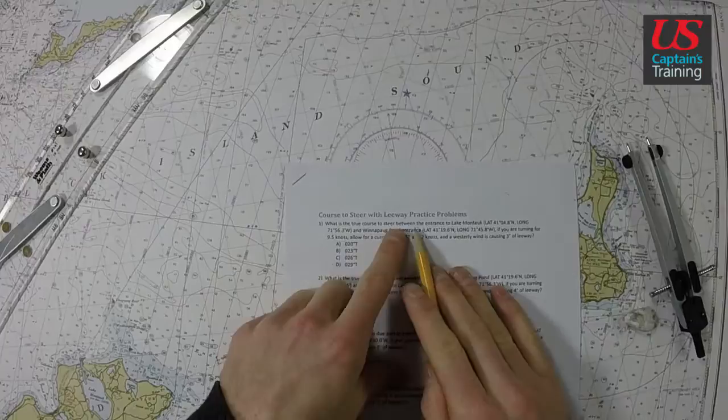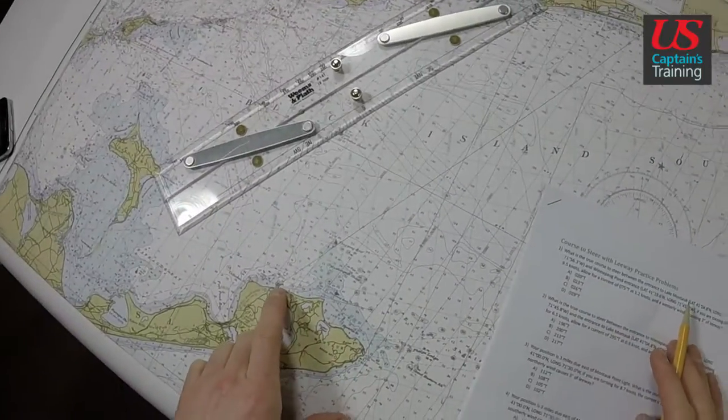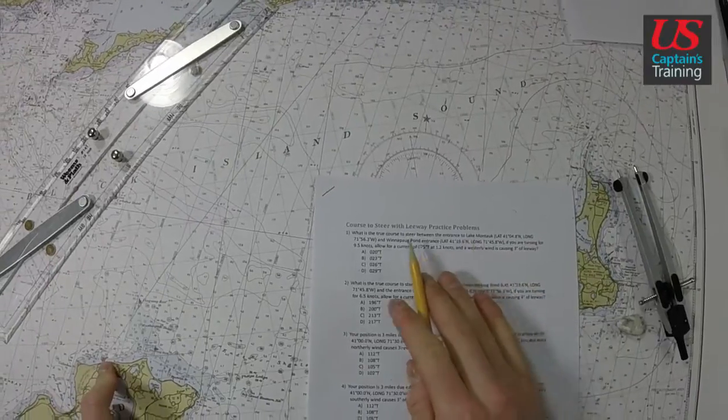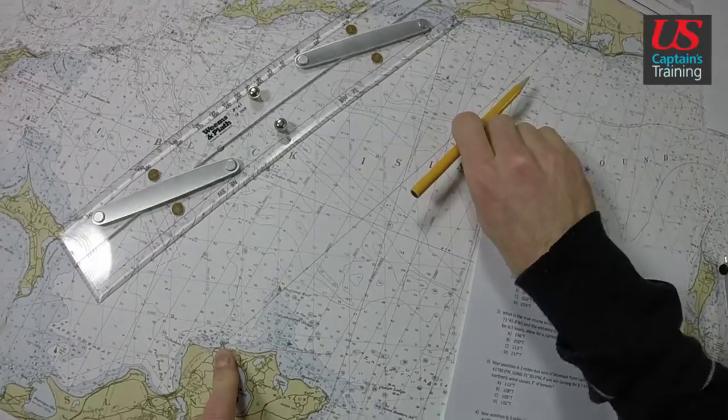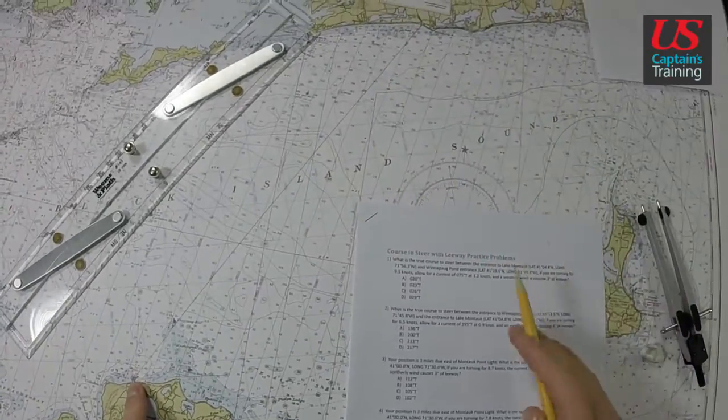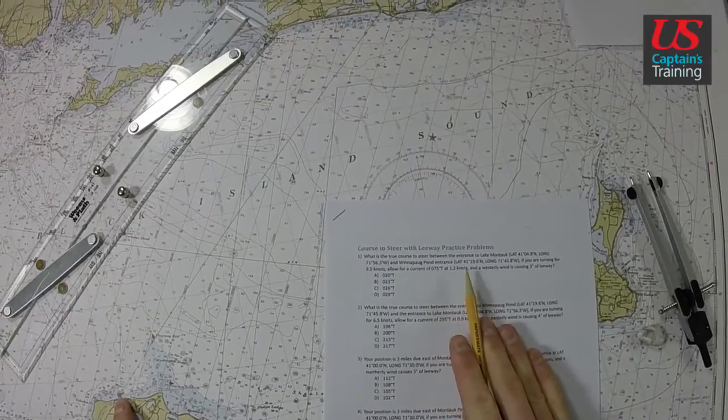You have to remember where we start and where we're going. The true course to steer between entrance to Lake Montauk—that is now the start because it was listed first—and Winnipeg Pond entrance, that's the end. So we're going this way and we're going to account for a current of 75 degrees true at 1.2.